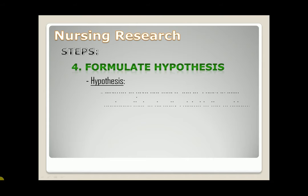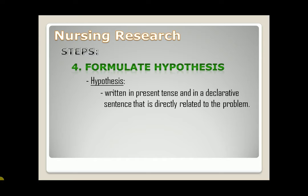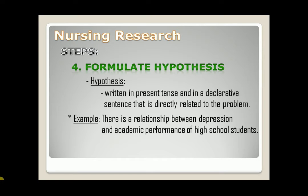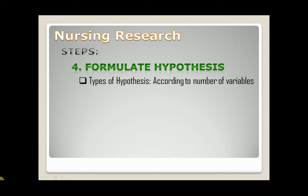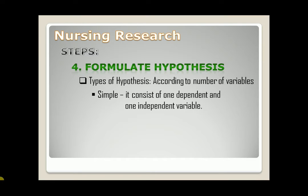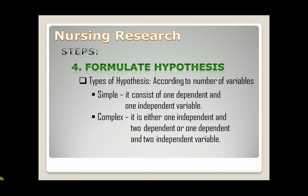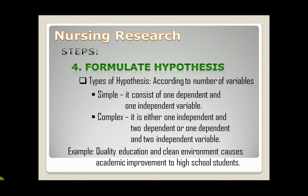What is hypothesis? A hypothesis is written in present tense and in a declarative sentence that is directly related to the problem. For example, there is a relationship between depression and academic performance of high school students. Types of hypothesis according to the number of variables: first, simple — it consists of one dependent and one independent variable, just like our example. Second, complex — it is either one independent and two dependent, or one dependent and two independent variables. For example, quality education and clean environment causes academic improvement to high school students.